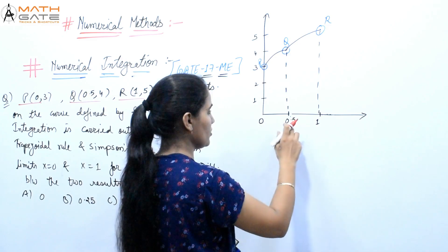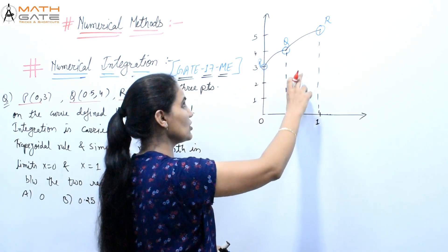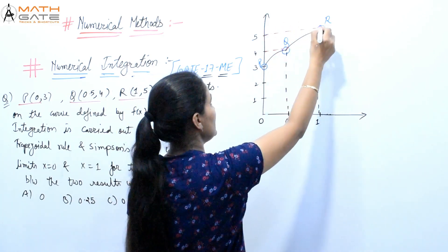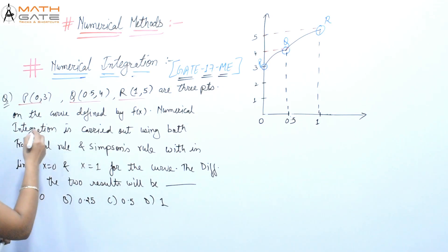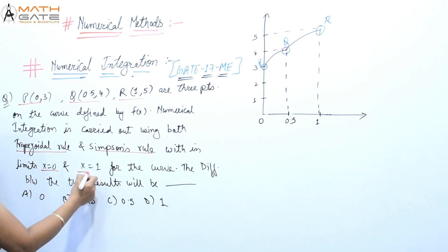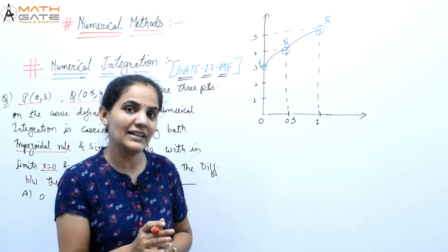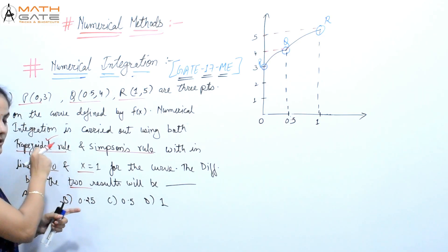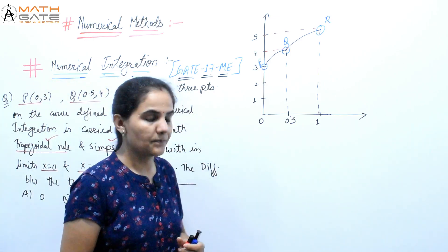So three points are defined on the curve: x = 0, 0.5, and 1, with function values 3, 4, and 5. Numerical integration is carried out using both Trapezoidal rule and Simpson's rule within limits x = 0 to 1. We need to find the difference between the values obtained by both methods.